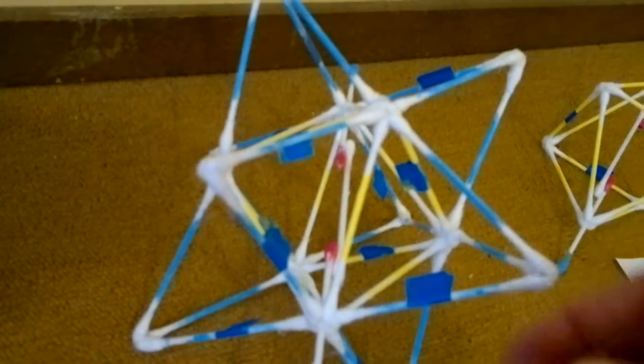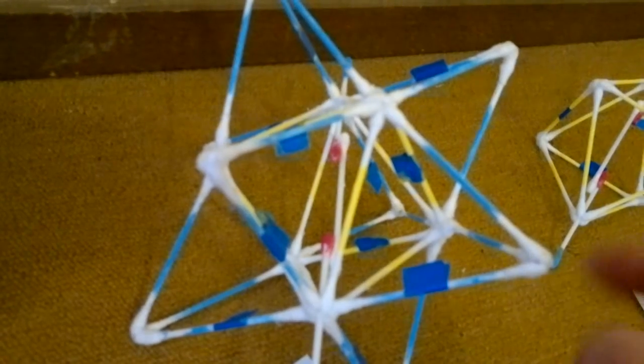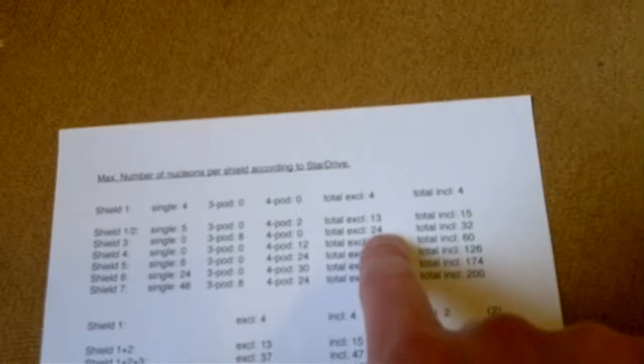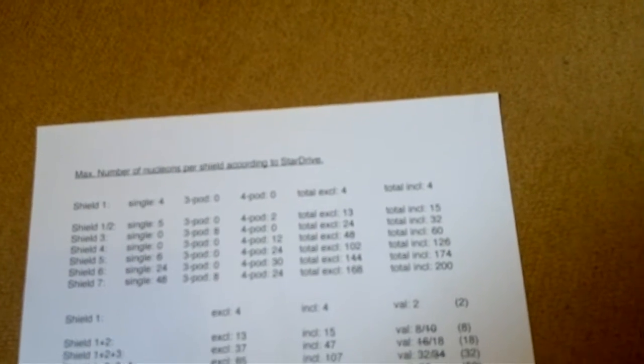But in reality, they're on there. So this is not just three, there's another one. Four times eight, 32 added. It's the third shield, 32. And over here, this list says 24. That's without those nucleons on top.